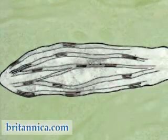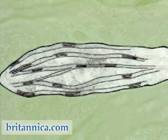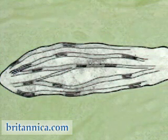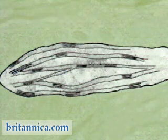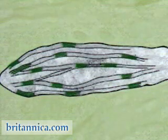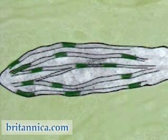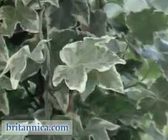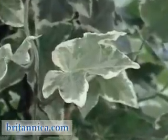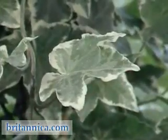The most noticeable characteristic of chloroplasts is their green color. The color comes from a pigment called chlorophyll. We can show that without the chlorophyll, photosynthesis does not take place.